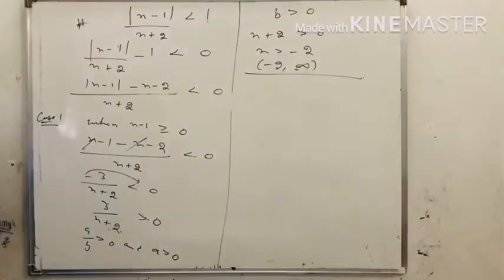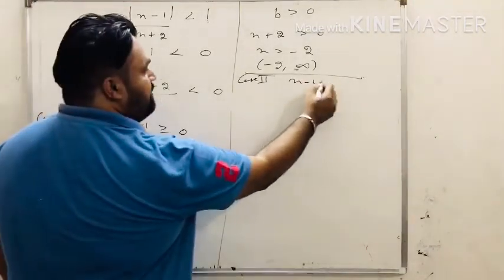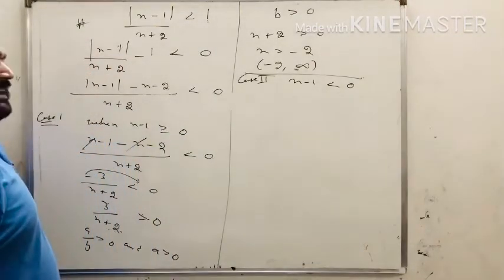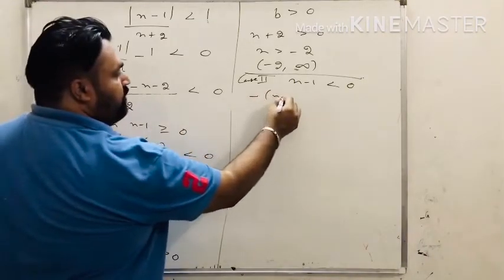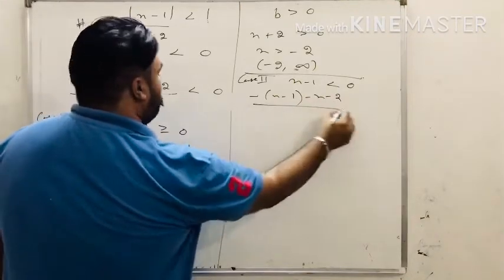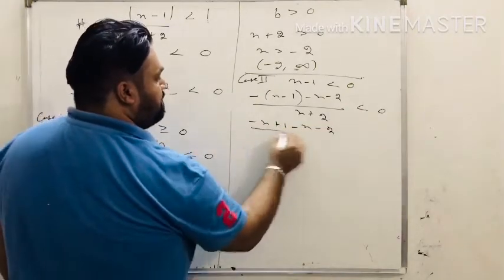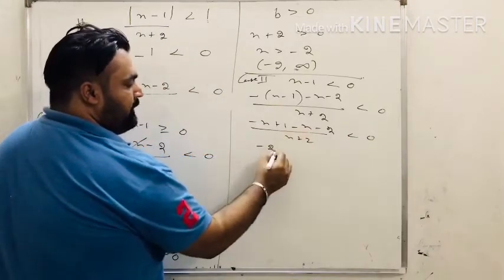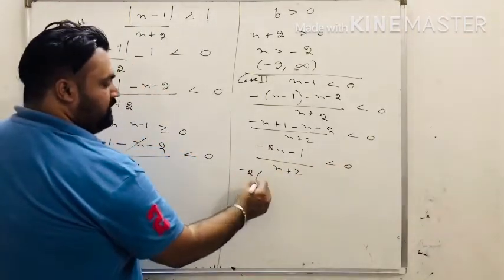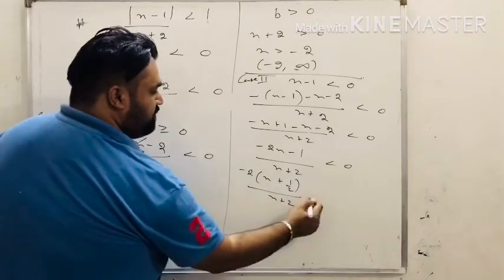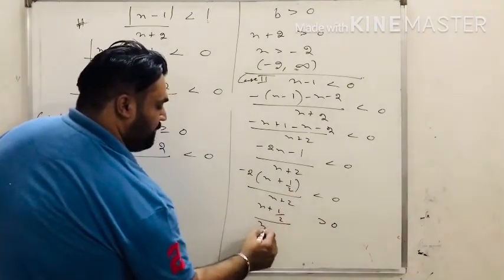Case 2: when x minus 1 is less than 0, the modulus becomes minus x plus 1. So we get minus x plus 1 minus x minus 2 upon x plus 2 less than 0. Simplifying: minus 2x plus 1 plus 2 minus 1 upon x plus 2, taking minus 2 as common gives x plus 1/2 upon x plus 2 less than 0. Shifting the sign changes it: x plus 1/2 upon x plus 2 greater than 0.